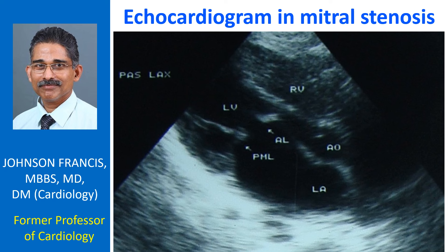Parasternal long axis view showing dilated left atrium, thickened and paradoxically moving — i.e., anteriorly in diastole — posterior mitral leaflet, and doming anterior mitral leaflet. The movement abnormalities of the mitral leaflets are due to commissural fusion.